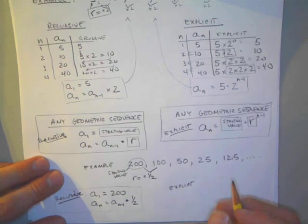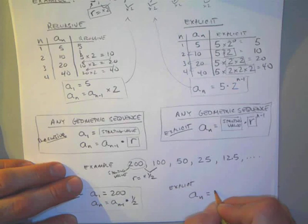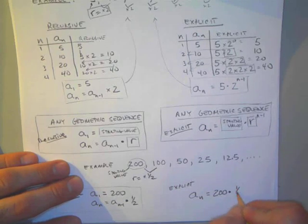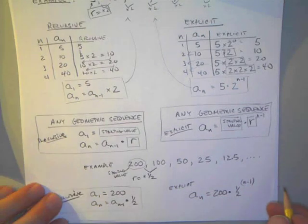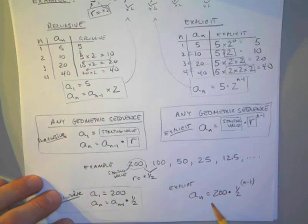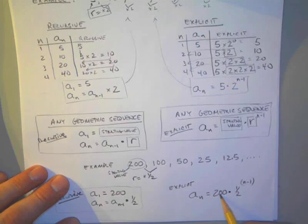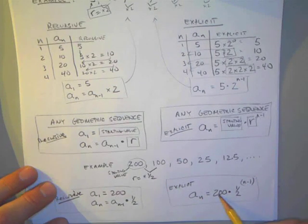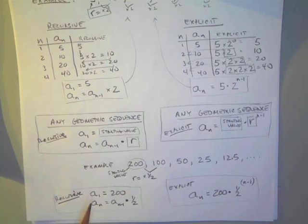To do the explicit, we follow our general rule: any term is equal to the starting value, which is 200, times the common ratio, which is one half, to the power of n minus 1. This is interesting because this looks like our exponential growth equation — where you have your starting value, your growth or decay factor, and your number of time periods. So our explicit equation for a geometric sequence is the same as exponential growth and decay. That's something to think about — that's it for now.